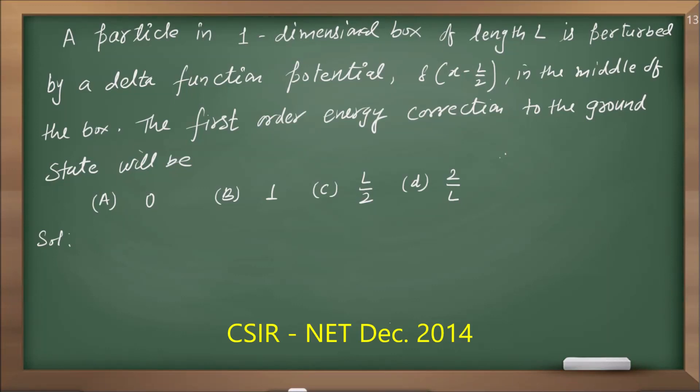The question is: a particle in a one-dimensional box of length L is perturbed by a delta function potential δ(x − L/2) in the middle of the box. The first-order energy correction to the ground state will be?